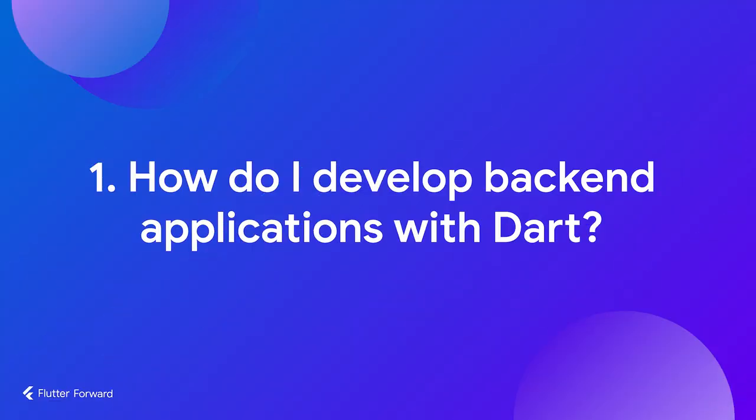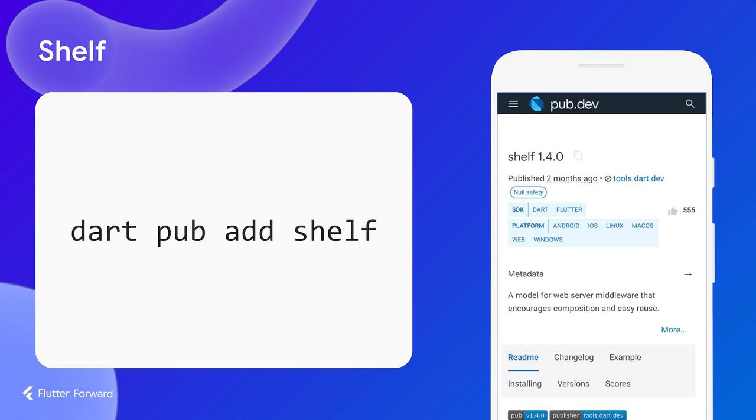Number one: how do I develop backend applications with Dart? The first question for anyone setting out to write a server-side app like this is what libraries to use. Just like Flutter developers don't want to write raw graphics calls, backend developers don't want to manually parse HTTP headers. For the basic glue code to get your server up and running, add the shelf package to your app, available on pub.dev.